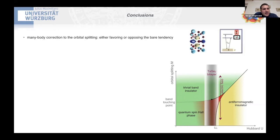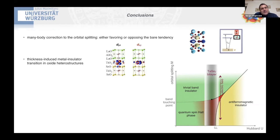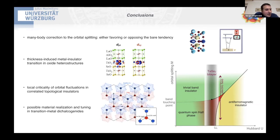So to conclude, I showed you the different possibilities that you have in heterostructures, in oxide heterostructures, in particular thickness-induced metal insulator transitions, and in the end, this local criticality in the correlated topological insulators that can be realized by bilayers of transition metal dichalcogenides. Thank you very much.